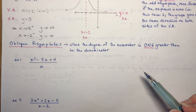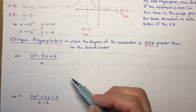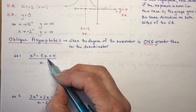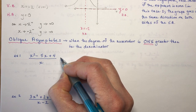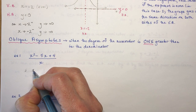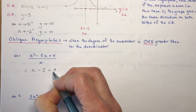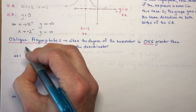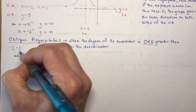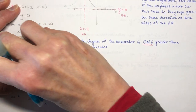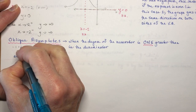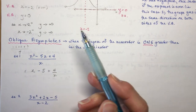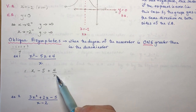To find an oblique asymptote, find an equivalent form of the rational expression. For (x² − 5x + 4)/x, you can divide each term by x, giving x − 5 + 4/x. This is like splitting a fraction into its parts — each term divided by x separately.